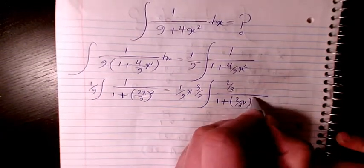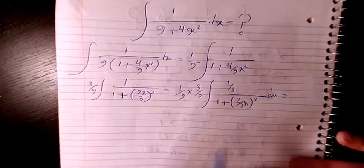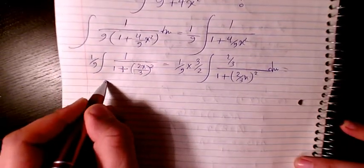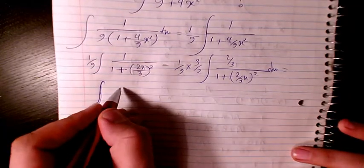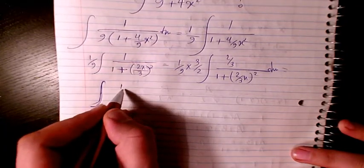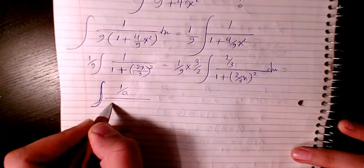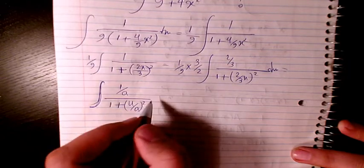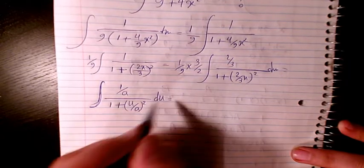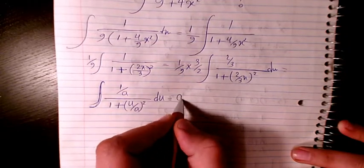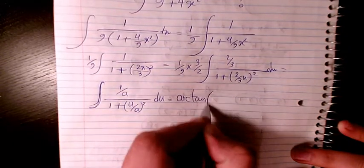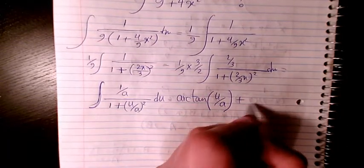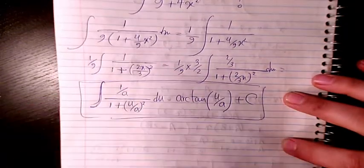And we know 1 over a divided by 1 plus u over a squared du, the integration of this function will be arctan u over a plus a constant value. So that is the integration for arctan.